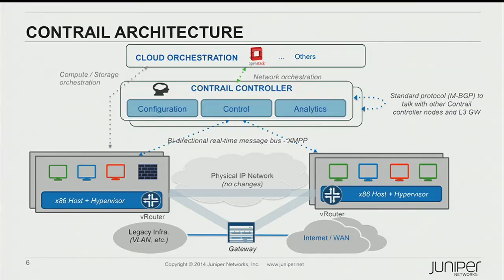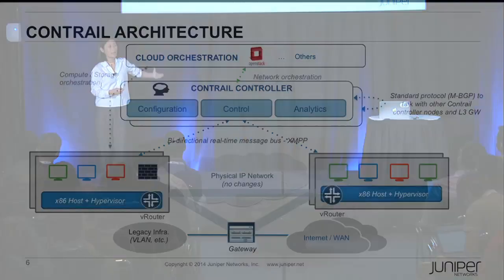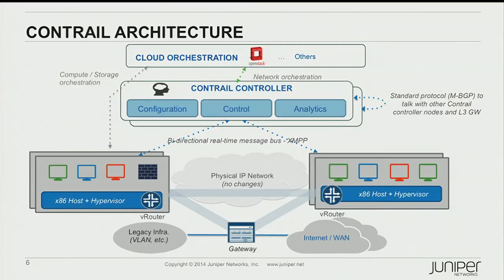A lot of the development and intellectual property was really around how do we scale the control plane. The early discussions around SDN were very focused on separating the control and forwarding plane — which if you look at large-scale routers today, from a software perspective they're already separated. But pulling a centralized control plane into a controller is where a lot of the focus has been, so we can drive distributed forwarding in what we call the VRouter. The balance in the architecture is that you need some level of centralization to ease manageability and get a system-level view, but for scale, resiliency, and low latency, certain components need to be distributed.